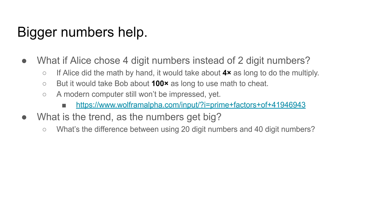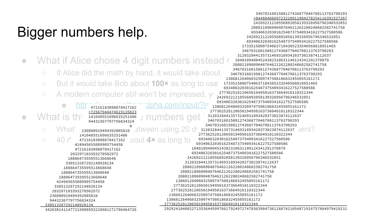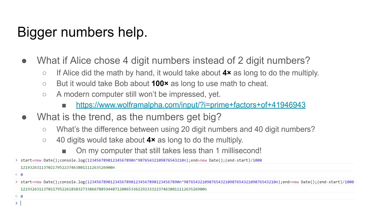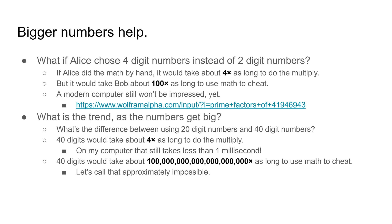What if we were using 20-digit numbers and we decided to upgrade to 40-digit numbers? Doubling both numbers means it'll take four times as long to multiply them, but that's still easy for a computer. My computer can multiply two 40-digit numbers so fast I can't even measure it — it shows zero for the time elapsed. On the other hand, cheating with 40 digits will be much harder than cheating with 20 digits. That number on the screen is a 1 followed by 20-something zeros. The NSA couldn't break that.